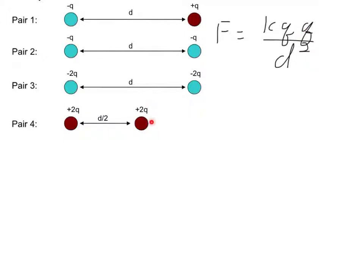Lastly, pair 4 still has the double charges, so the numerator for pair 4 would be the same as the numerator for pair 3, but now the distance is cut in half, and as we discussed with the universal law of gravitation, when the two particles are closer together, that's going to increase the force. Additionally, since the denominator is squared, when you halve the distance, you make the force four times greater.